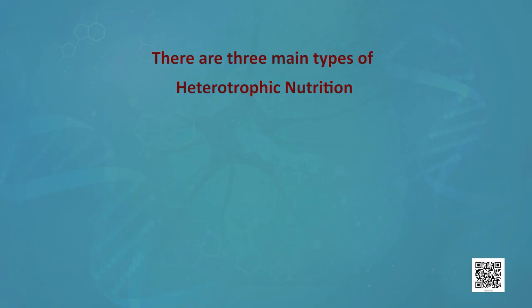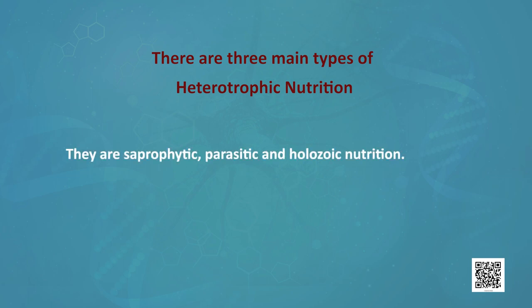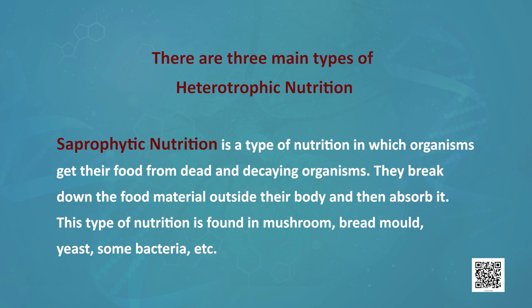We have discussed how autotrophic nutrition takes place in plants. There are three main types of heterotrophic nutrition: saprophytic, parasitic and holozoic nutrition. Saprophytic nutrition is a type of nutrition in which organisms get their food from dead and decaying organisms. They break down the food material outside their body and then absorb it. This type of nutrition is found in mushrooms, bread mold, yeast and some bacteria.